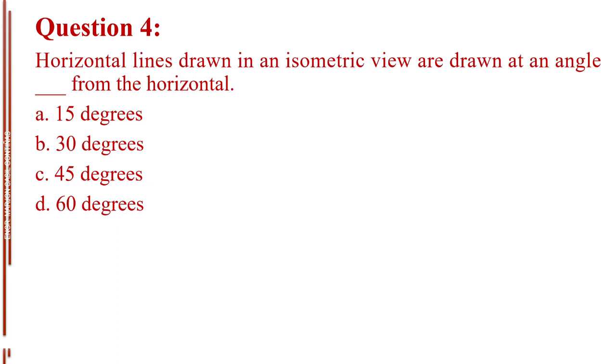Question number 4. Horizontal lines drawn in an isometric view are drawn at an angle blank from the horizontal. Letter A, 15 degrees. Letter B, 30 degrees. Letter C, 45 degrees. Letter D, 60 degrees. The answer is Letter B, 30 degrees.